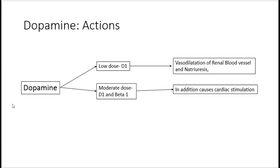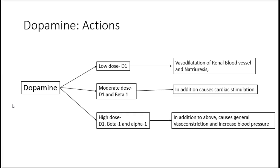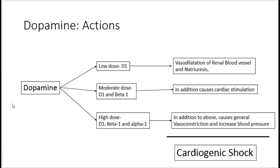At high dose, dopamine acts on all three receptors including alpha 1, causing general vasoconstriction and increase in blood pressure. Because of these three dose-dependent effects — cardiac stimulation, improved blood supply to vital organs like the kidney, and treatment of circulatory shock — dopamine is the drug of choice in cardiogenic shock and is given by IV infusion.